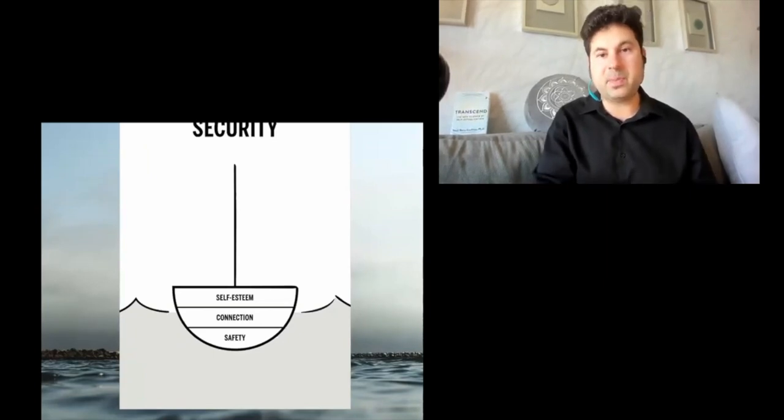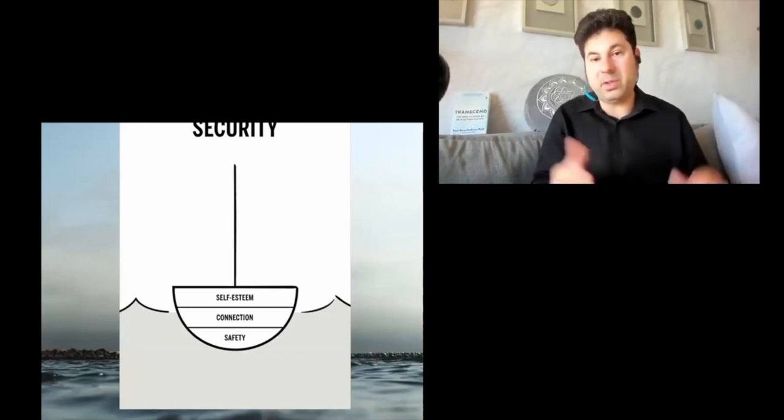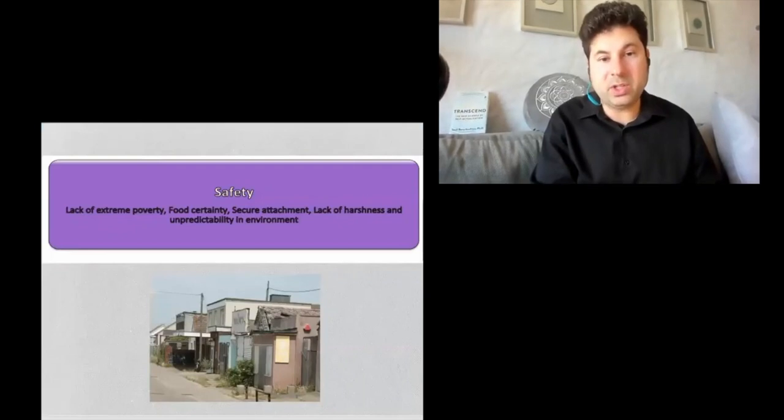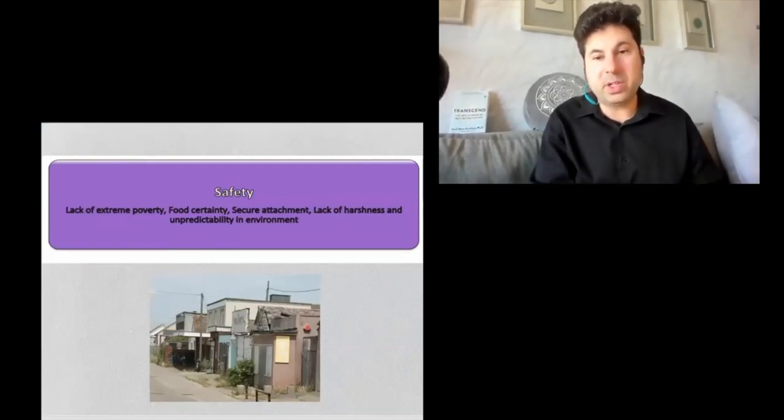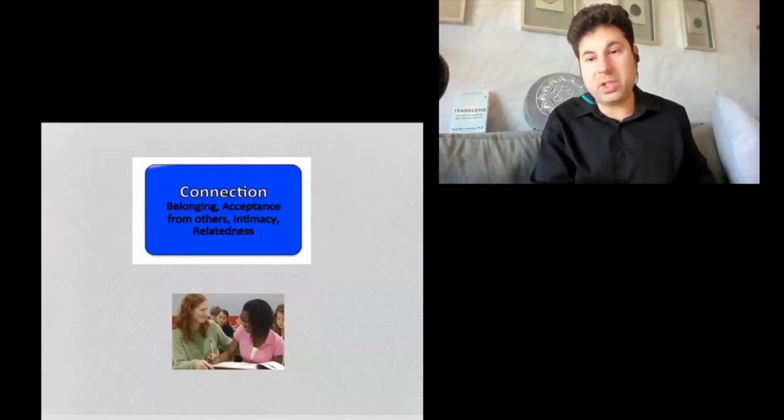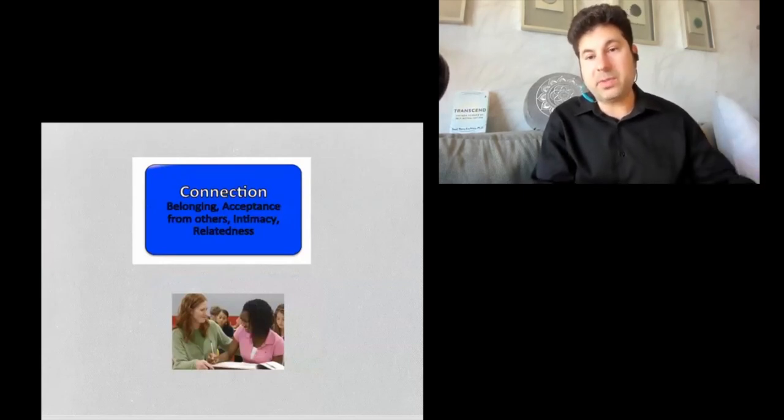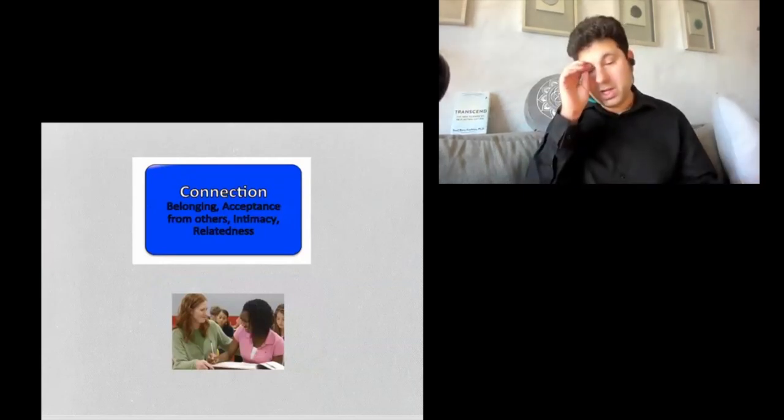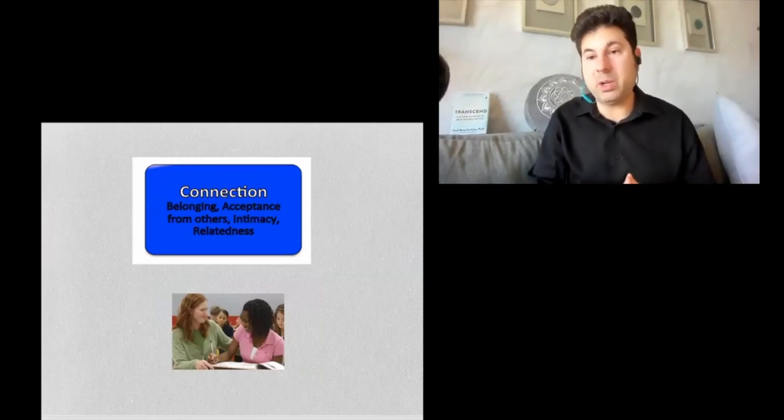Let me just go through the different aspects of this new model of human needs. You have security needs that are really important. Security needs, you have things like lack of extreme poverty, food certainty, lack of harshness and unpredictability in the environment. You have the need for connection, things like belonging, acceptance from others, intimacy, relatedness.